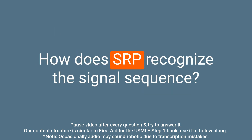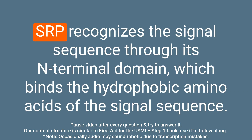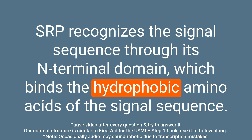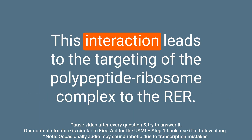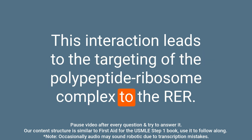Question: How does SRP recognize the signal sequence? Answer: SRP recognizes the signal sequence through its N-terminal domain, which binds the hydrophobic amino acids of the signal sequence. This interaction leads to the targeting of the polypeptide ribosome complex to the RER.